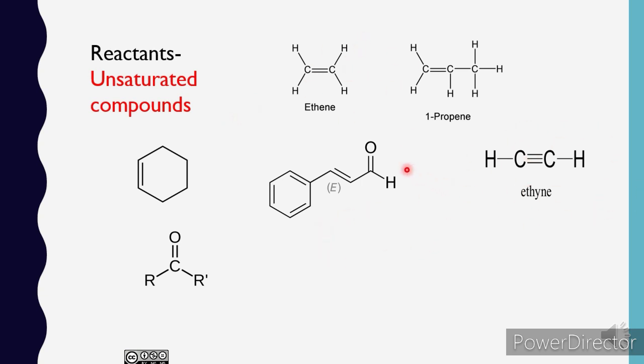These are a few examples of unsaturated compounds that give addition reaction. It must have C double bond O, C double bond C, C double bond N, or C triple bond C.